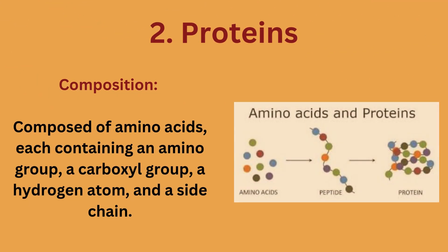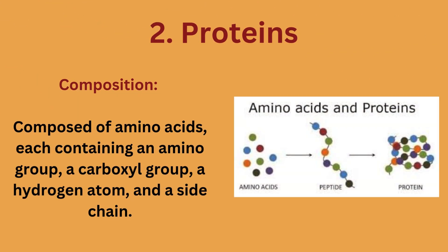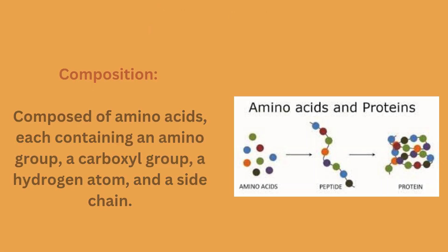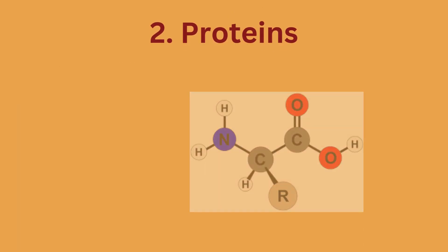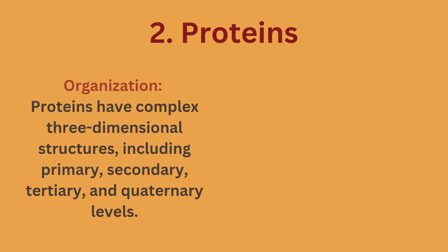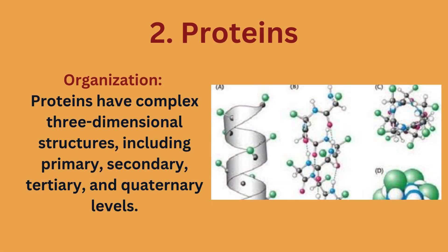2. Proteins. Composition: composed of amino acids, each containing an amino group, a carboxyl group, a hydrogen atom, and a side chain. Monomers: amino acids. Organization: proteins have complex three-dimensional structures, including primary, secondary, tertiary, and quaternary levels.